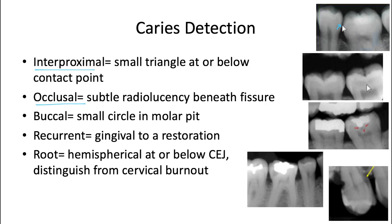An occlusal caries lesion is much tougher to see radiographically. It's going to be a subtle radiolucency that's slightly darker than dentin, with the most common location beneath a fissure. It's going to have diffuse borders, so it's hard to exactly trace where the lesion stops. These occlusal caries lesions are going to be hard to trace and will remain relatively centered on the crown.